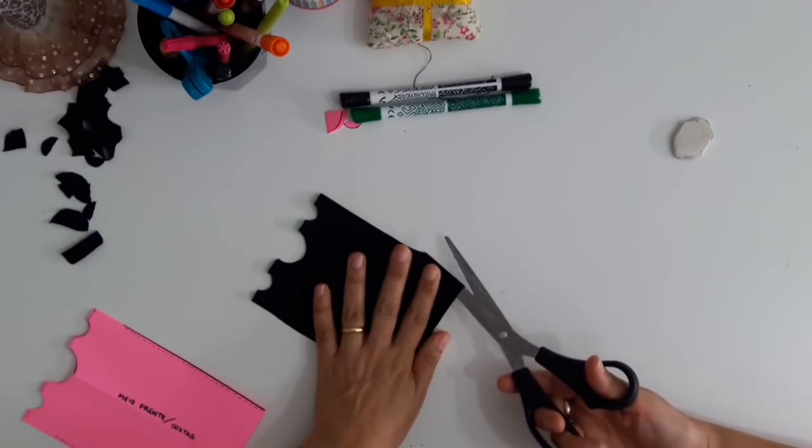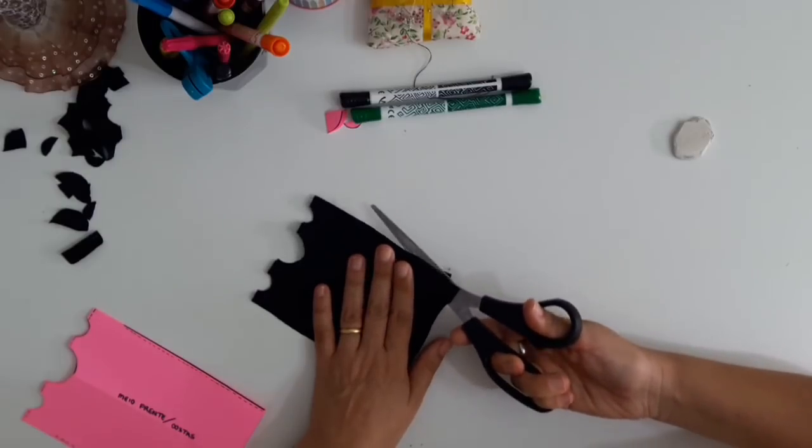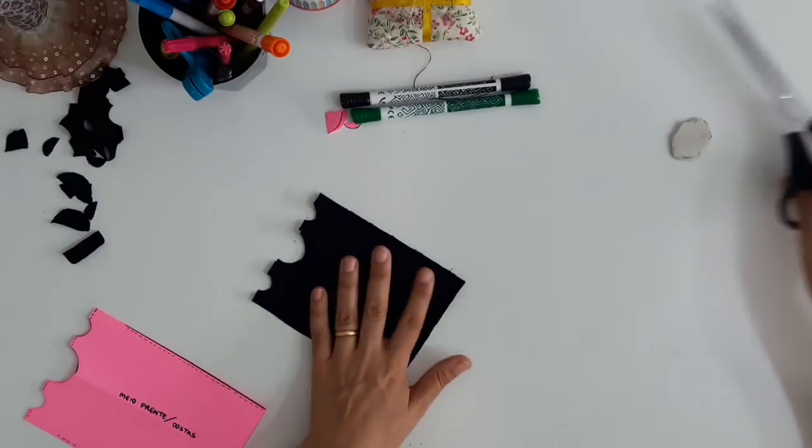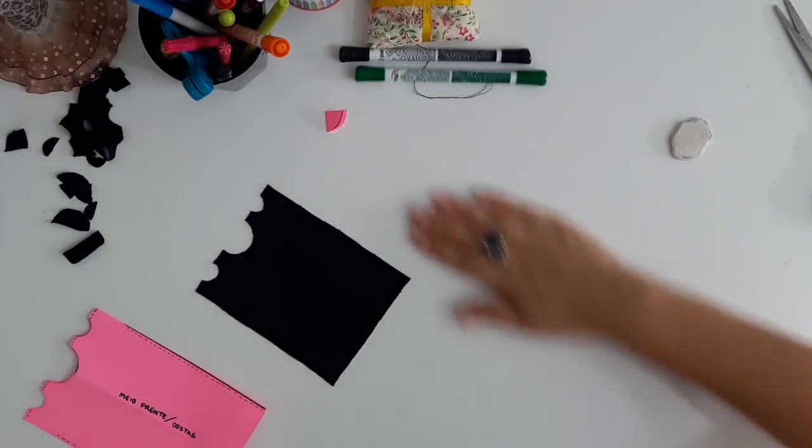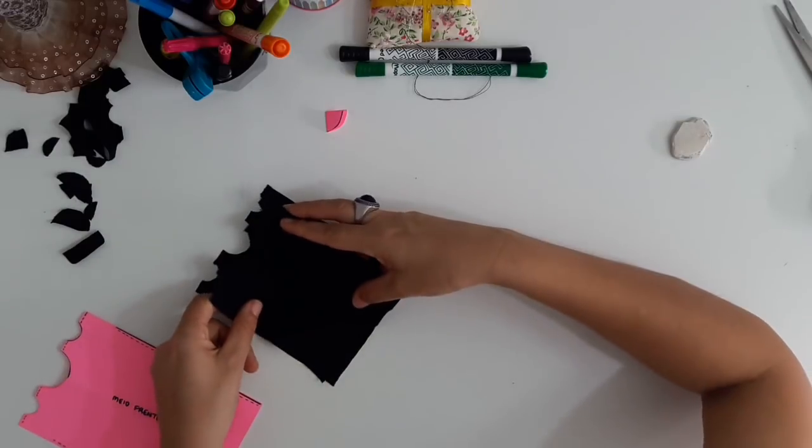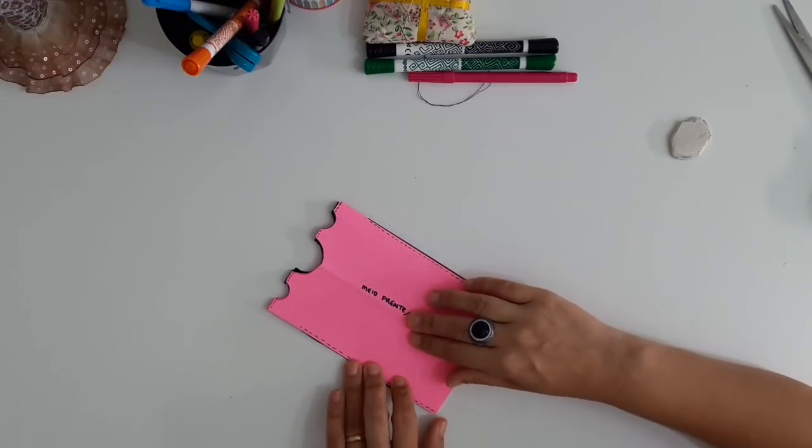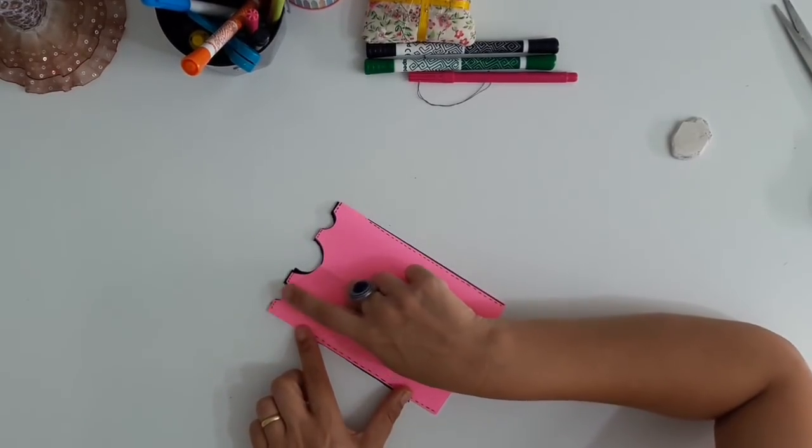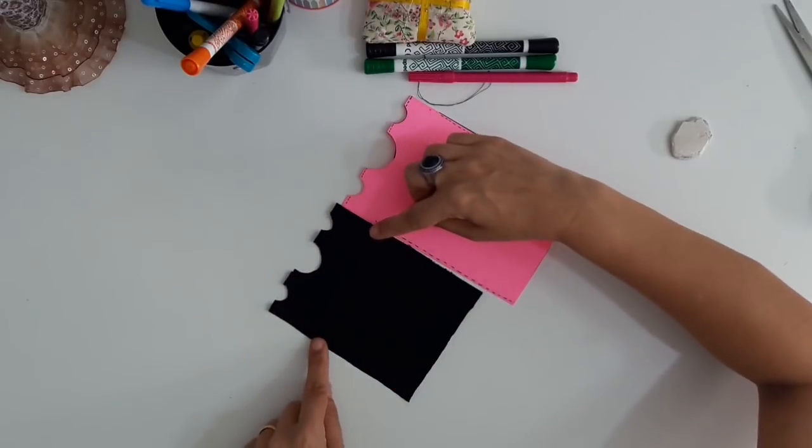I'm going to open here the lateral, so that later I can sew, leaving the space corresponding to the armholes. There's no need to finish, because as it's a knit, if you cut very precisely and your scissors are well sharpened, there's no need. So, it's here. I'm going to sew, joining the shoulders and the laterals.